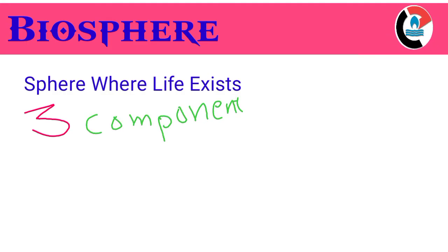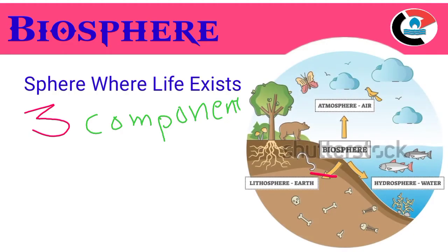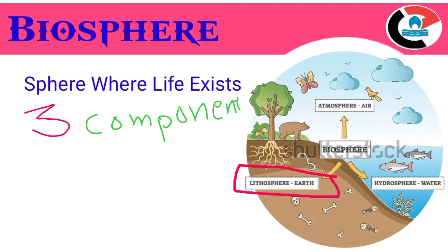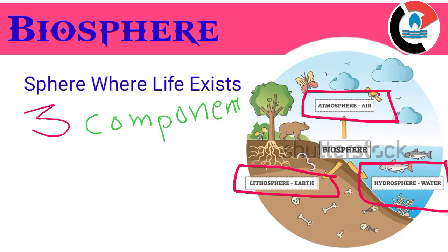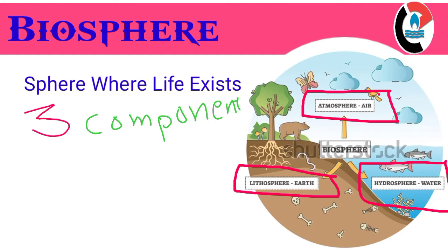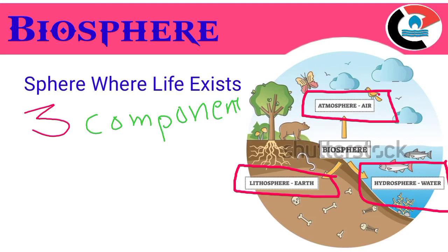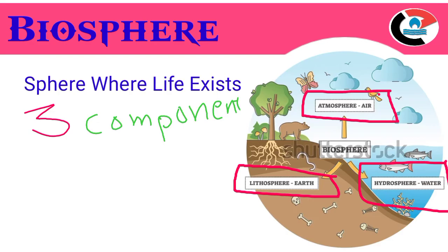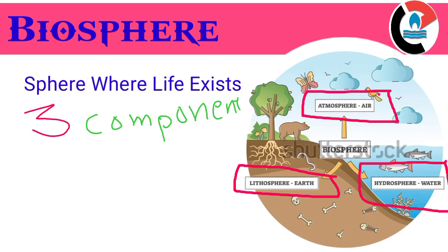The three components of the biosphere are: lithosphere, that is land; hydrosphere, that is water; and atmosphere, that is air. Life originated and evolved because of this unique combination. The life-supporting zone on Earth where these three meet, interact, and make life possible is known as the biosphere.